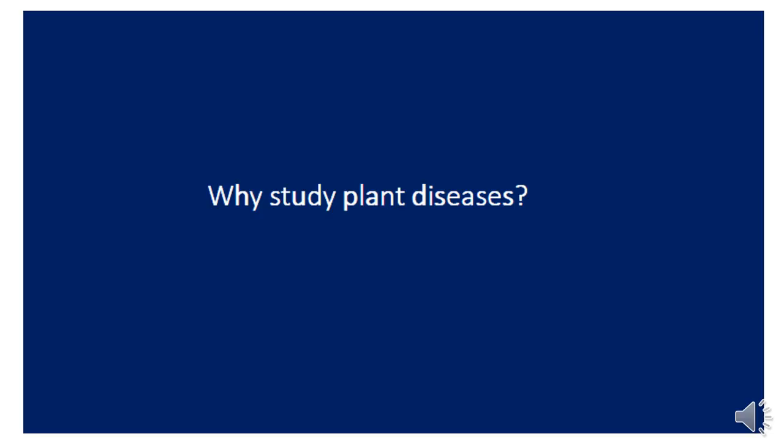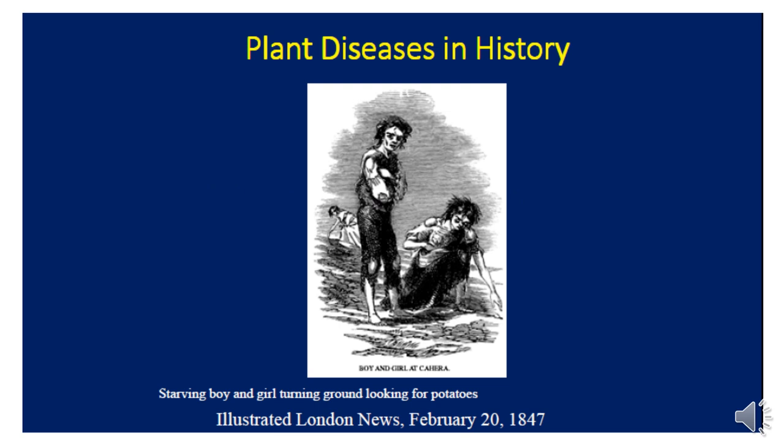Why are we studying plant disease? Historically, we find that a specific plant disease that infected potato caused a famine in Ireland, destroying all the potato crop. The people could not find any crop to eat because the main source of food for European people — especially Irish people — was potato. After the crop was killed and destroyed, they could not find any food to eat, and they started to starve, emigrate to other areas, and some of them died.